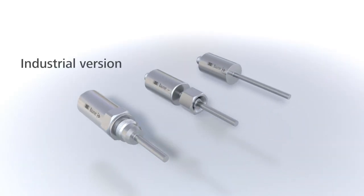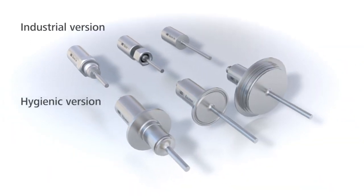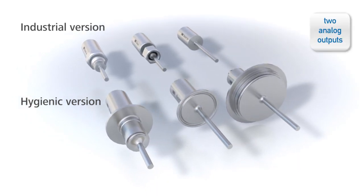FlexFlow in two versions. Industry-specific process connections, as well as hygienic process connections with our Balmer-specific BHC. Available as analog variants with two outputs for temperature and flow, as well as in an IO-link version.